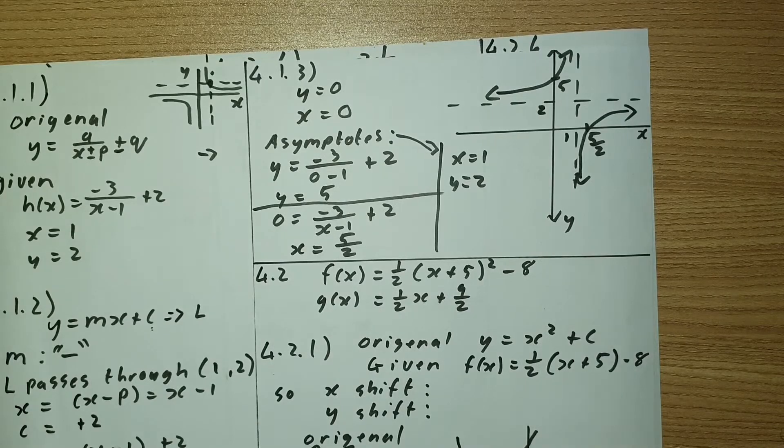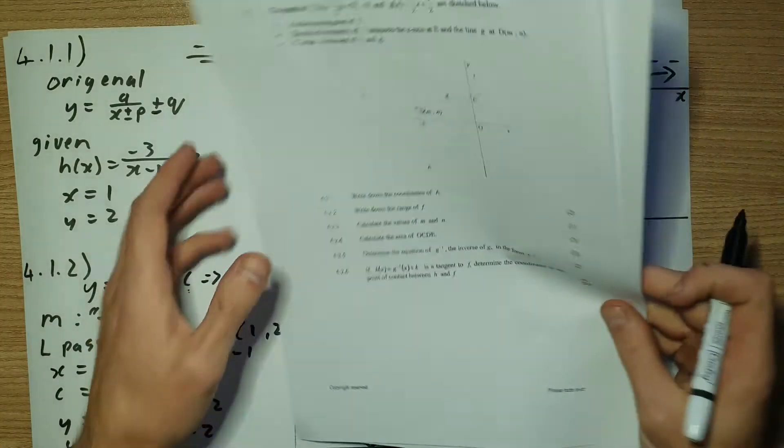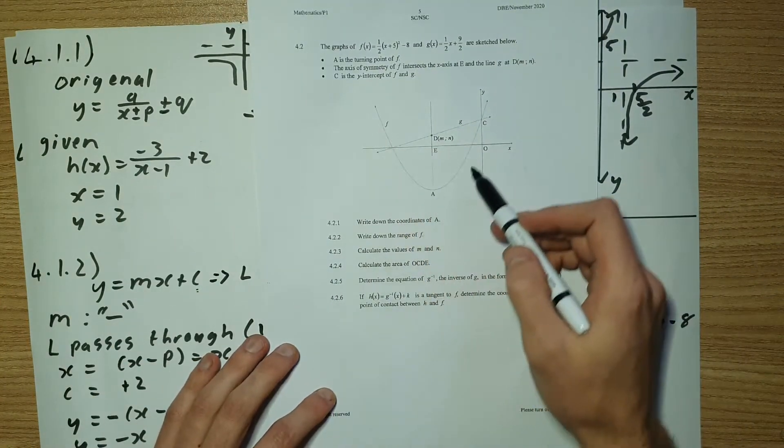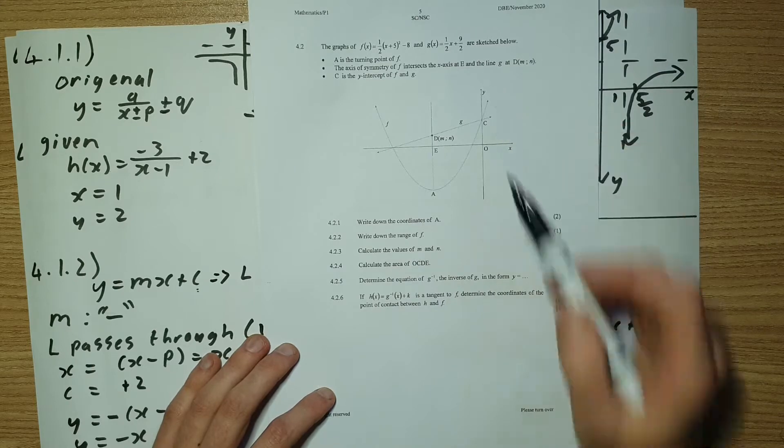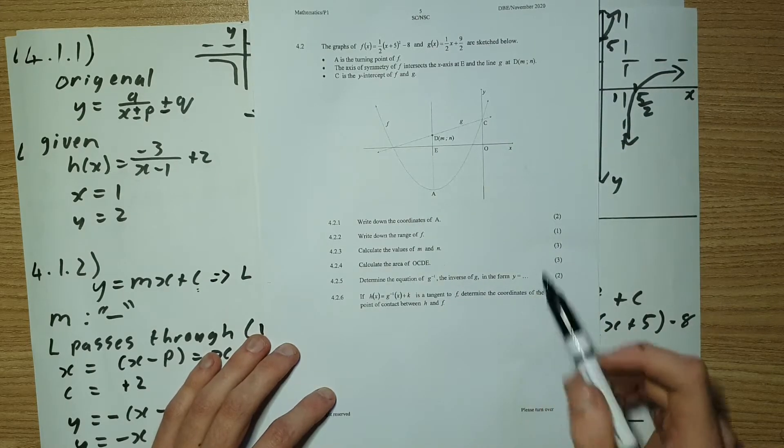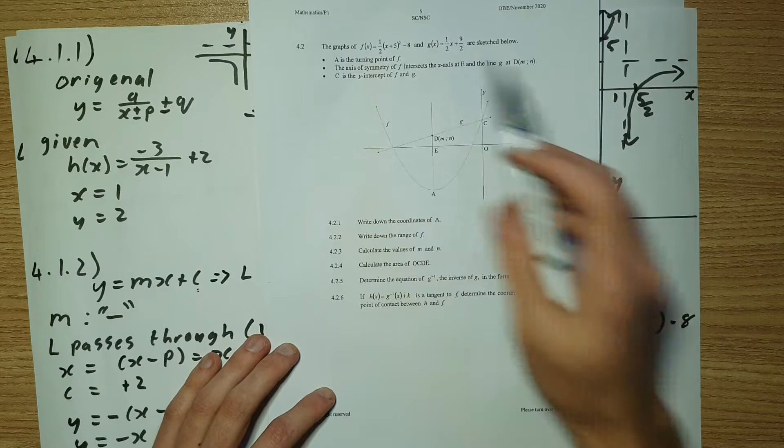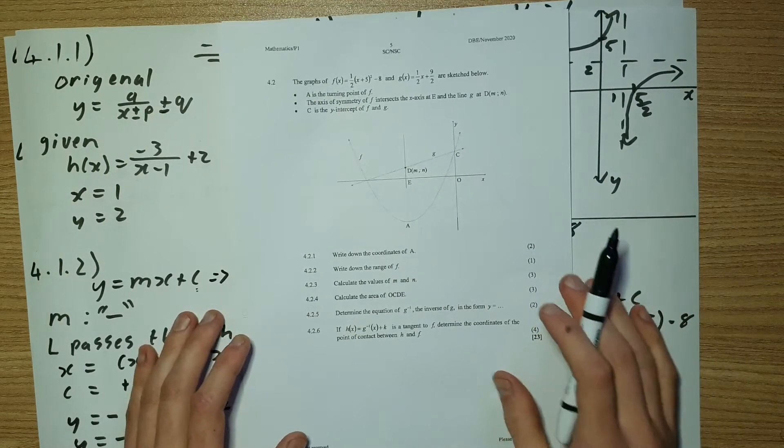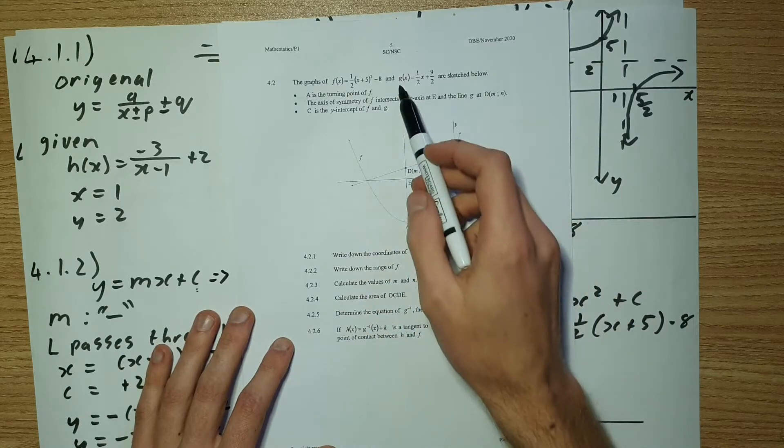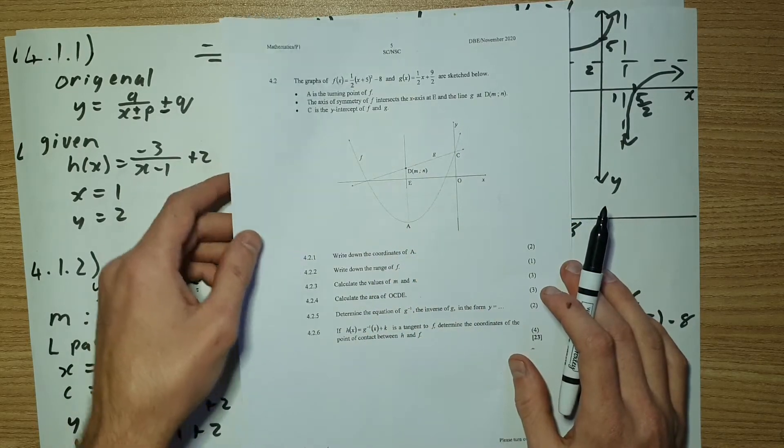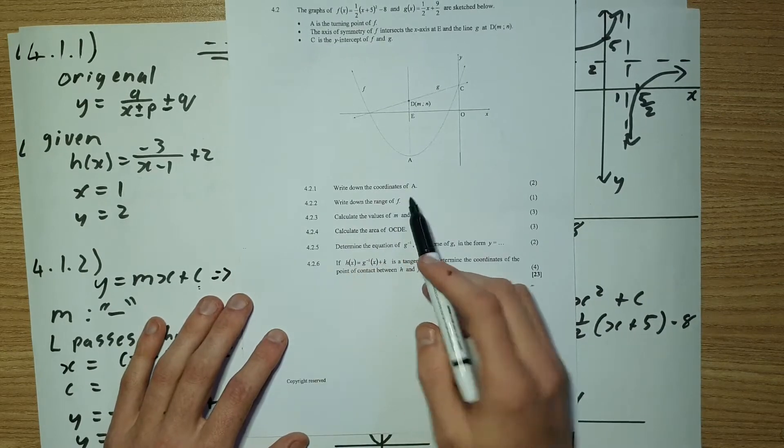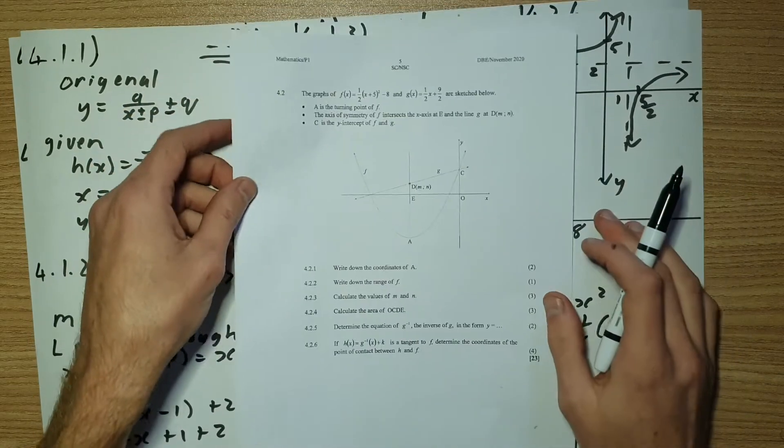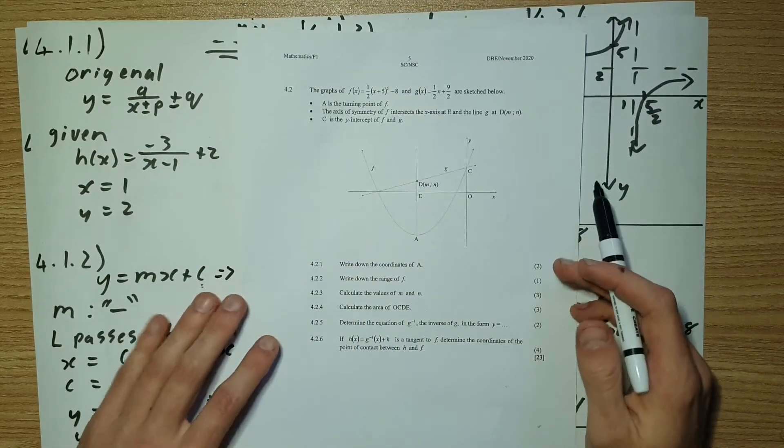Now, let's have a look at 4.2. So 4.2 gives us another graph. At first sight, we can see we're dealing with a parabola. It's a smiley face parabola. So we have a positive constant in the front. We can see it shifted off the axes, and we have a straight line running over here, g of x. So 4.2.1 says write down the coordinates of a. So note that a is my turning point, as also stated at the top here.